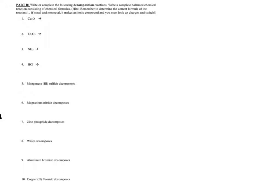Once you know how to write synthesis reactions, decomposition reactions are really simple because they are the exact reverse. Rather than having just one product, you have just one reactant — one formula on the left-hand side. A very common example is a compound breaking down into its constituent elements. Remember, when writing elements by themselves, always ask: is it diatomic? The seven diatomic elements are Hofbrinkl: H, O, F, Br, I, N, Cl.